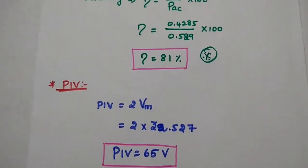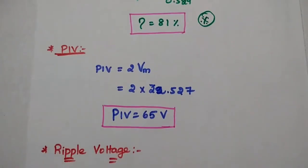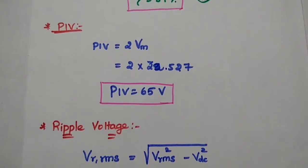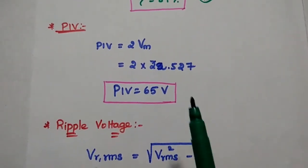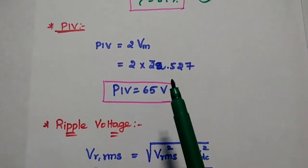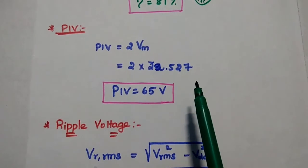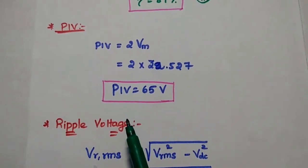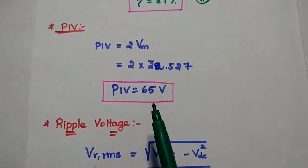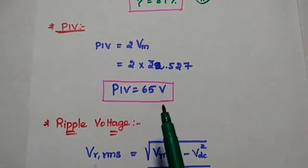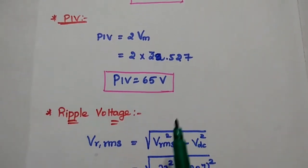The next one is peak inverse voltage, which equals 2 × Vm. The maximum voltage is 32.527 V, so the peak inverse voltage for this full wave rectifier is 65 V.